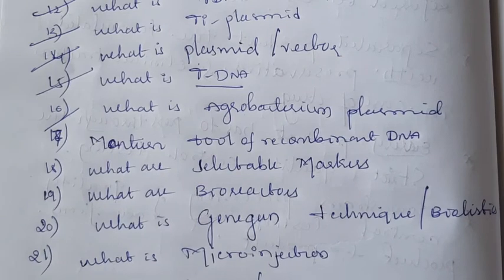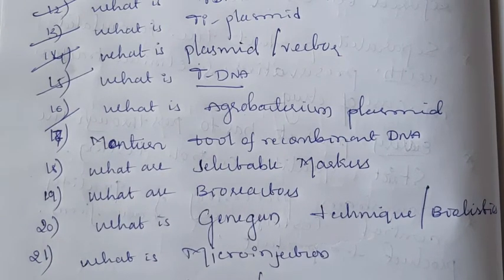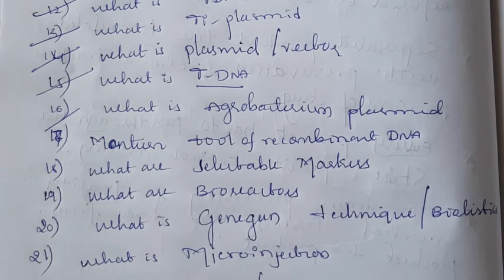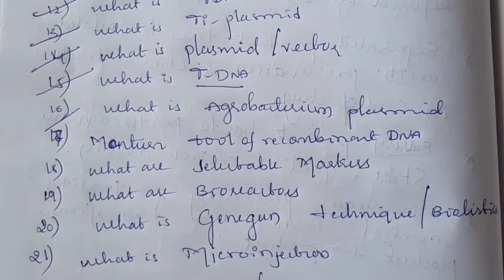Next question: mention tools of recombinant DNA technology. Tools of recombinant DNA technology include useful enzymes such as DNA ligase, restriction enzymes, gel electrophoresis, and PCR. All of these come under the tools of recombinant DNA technology.